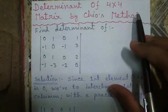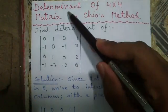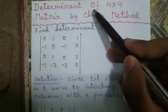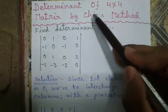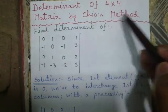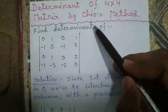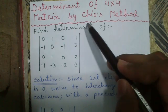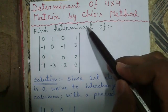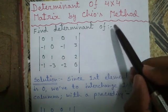Hello my dear friends, I am Cjoy and today I will tell you how to find the determinant of a 4 cross 4 matrix by Chiyo's method. Chiyo's method is a very easy method and can be used to find the determinant of square matrices of any order.